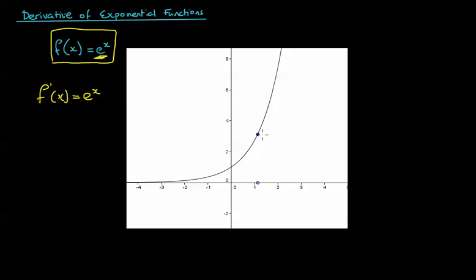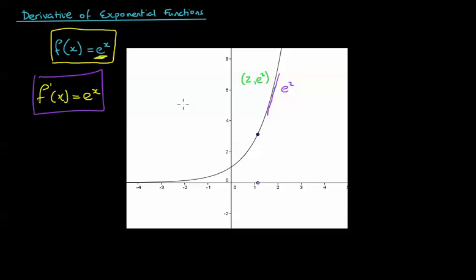That means if I want to work out the gradient on this graph at, let's say, x equals 2, going up to 2 here, the coordinate would be 2 across and e to the power of 2. But also the gradient of the tangent line would also be e to the power of 2. So that is the derivative function of e to the power of x — it is e to the power of x.